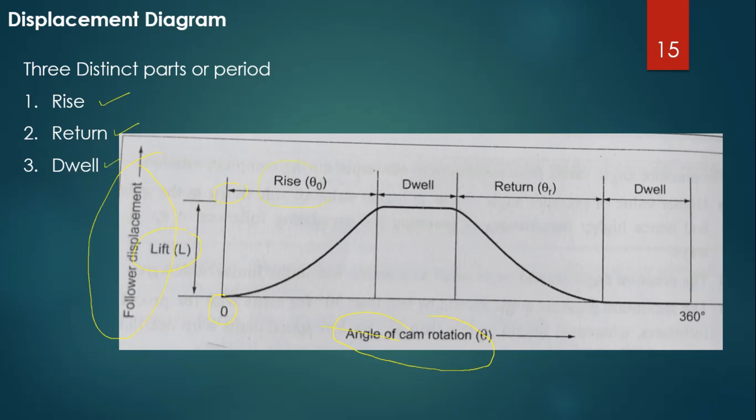Rise means the follower moves from initial position to top position. Return means the follower returns from the final position to the initial position. Dwell is the period during which the follower remains at rest — dwell may occur between rise and return, or after return, depending on the requirement of the cam.